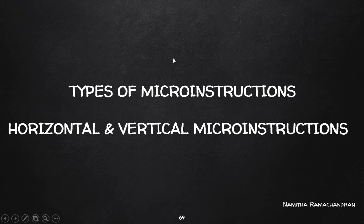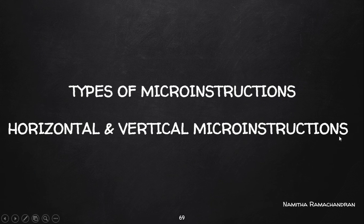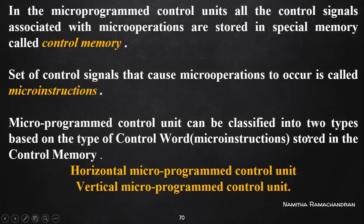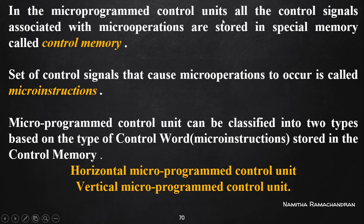Welcome back to this tutorial. We will discuss various types of micro instructions. There are basically two types: horizontal and vertical micro instructions. We will discuss the properties of these types in this video. Before starting, we consider some basic properties already discussed in our previous video about the micro program based control unit.